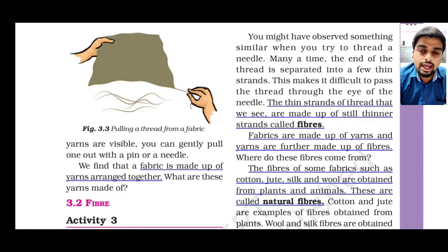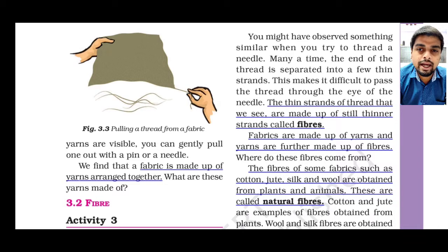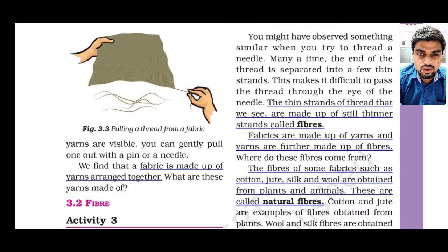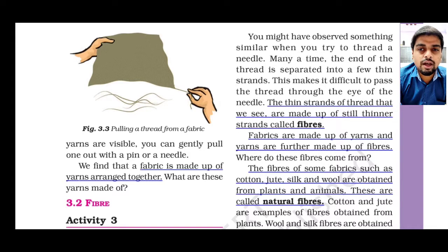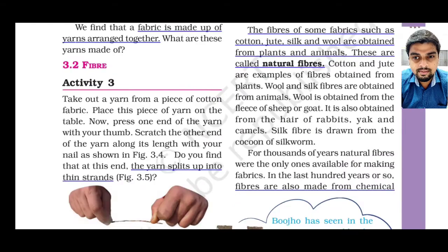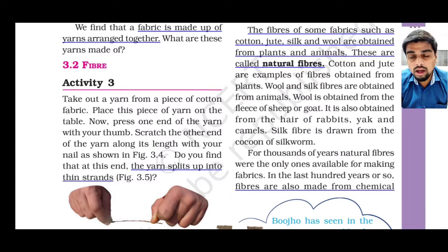So where do fibers come from? Fibers come from either natural resources or can be made by humans. The fibers obtained from natural resources such as plants and animals are known as natural fibers. As given in the book, cotton, jute, silk, and wool are examples of natural fibers.